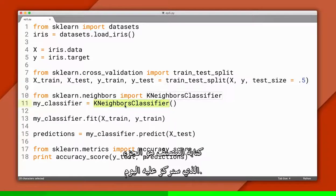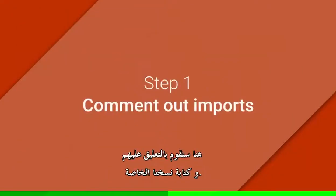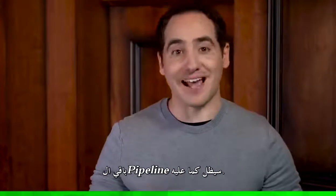Writing the classifier is the part we're going to focus on today. Previously, we imported the classifier from a library using these two lines. Here, we'll comment them out and write our own. The rest of the pipeline will stay exactly the same.